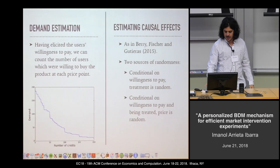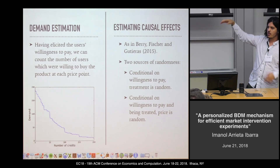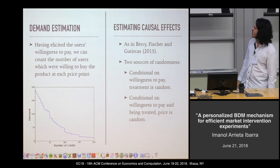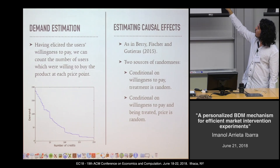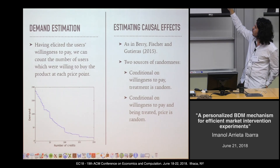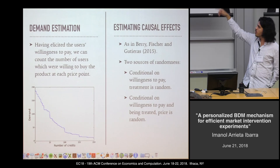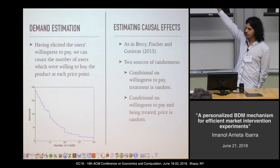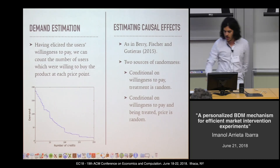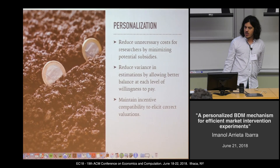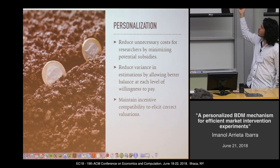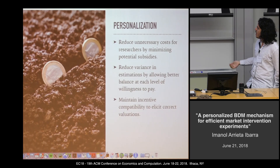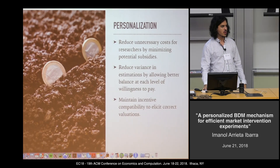Going back to demand estimation and causal effects: with the BDM mechanism we can elicit people's willingness to pay because it's an incentive-compatible mechanism, assuming users are expected utility maximizers. When estimating causal effects, we have two sources of randomness — conditional on willingness to pay the treatment is random, and conditional on willingness to pay and being treated the price people pay is random. We'll concentrate on the first type of randomization. What we do is use personalization to reduce unnecessary costs, reduce the variance of our estimators, and we show that it still maintains incentive compatibility.